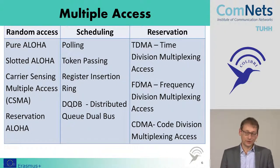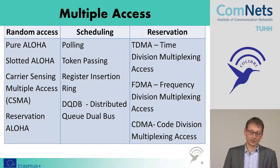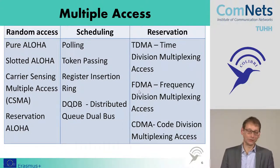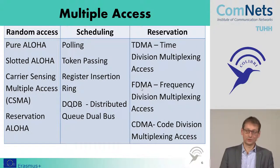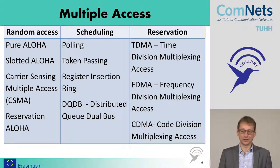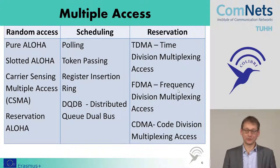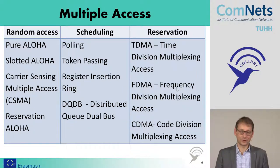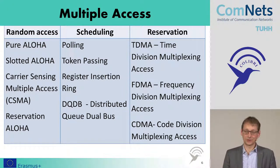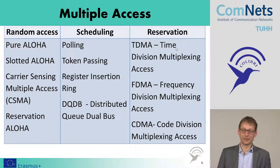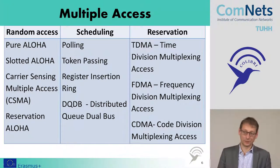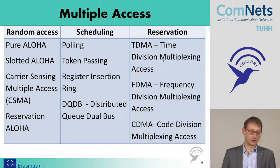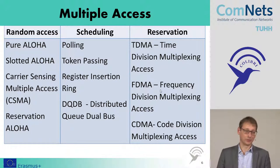You can also do frequency division multiple access — giving different users different frequencies. The problem is you have to assign and use the frequency, and reassignment is not easy. But everyone can use their frequency all the time. With TDMA, everyone uses their time slot covering all the bandwidth — so you get more bandwidth per user but not all the time, whereas with FDMA you get less bandwidth per user but all the time.